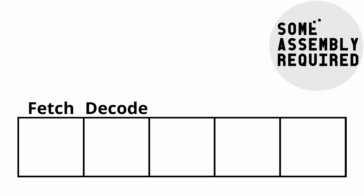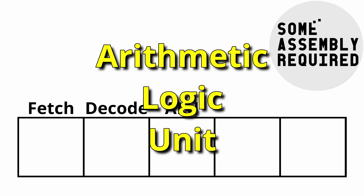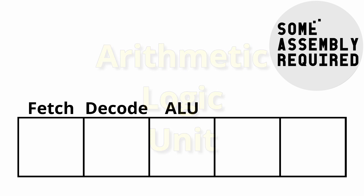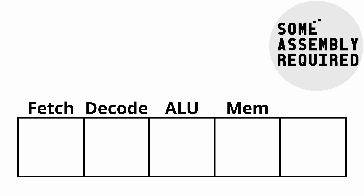Stage three is called ALU, or arithmetic logic. If we need to perform arithmetic — addition, subtraction, and such — or logic, such as AND and OR, this is the stage in which we will do it. Stage four is called MEM. In this stage, we access the memory, either for reading or for writing. Last, stage five is called write-back. At this stage, we modify any register that needs to be modified.